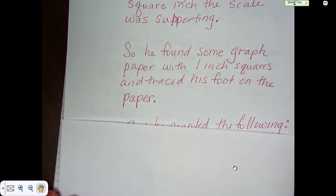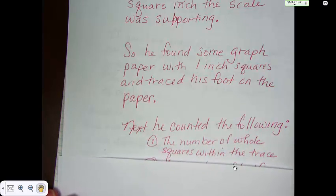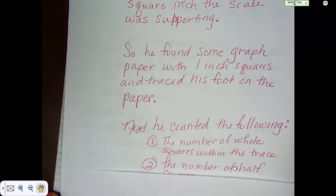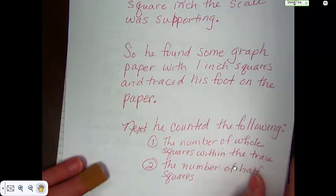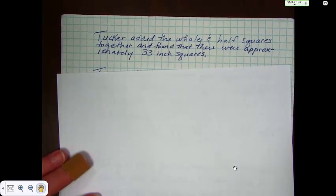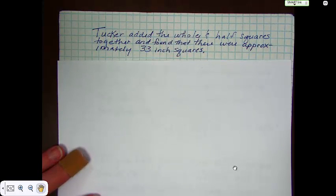Does it sound too hard? Next, he counted the following: the number of whole squares within the trace and the number of half squares within his traced foot. So Tucker added the whole and half squares together and he found out that there were approximately 33 one inch squares.